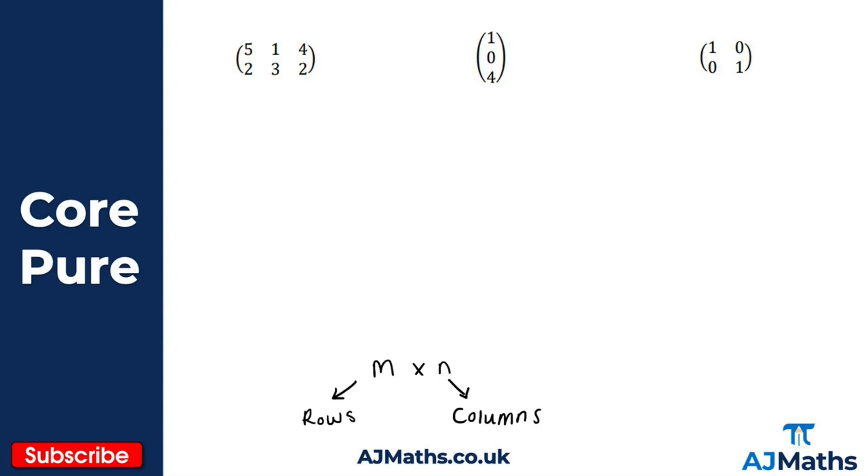Now we've got three examples on the screen here that we're going to work through together and on the next slide two examples or two problems for you to have a go at yourself. So if we start with this first example here remember we just start by counting the number of rows, so I've got one, two rows, so we've got two rows. And now we count the number of columns, well I've got one, two, three columns, so this is a two by three matrix.